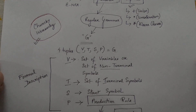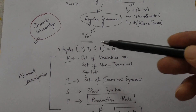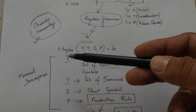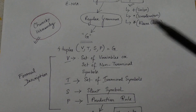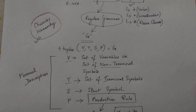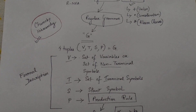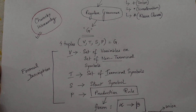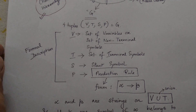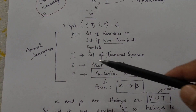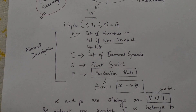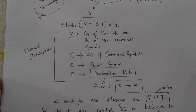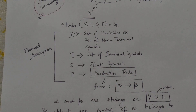Regular grammar is represented by capital letter G and comprises four tuples: V, T, S, and P. According to the formal description, V is a set of variables or non-terminal symbols, T is a set of terminal symbols, S is the start symbol, and P is the production rule. I will explain the meaning of these with an example.